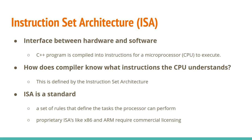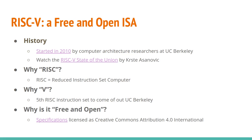Proprietary ISAs like x86 and ARM require licensing, so you can't just use them. RISC-V is a free and open source instruction set. It started about 10 years ago at UC Berkeley by a group of computer researchers led by Krste Asanović. He gives a talk called the RISC-V State of the Union a couple of times a year. RISC stands for Reduced Instruction Set Computer — a concept in computer architecture from the early 80s that's become quite dominant. ARM is a RISC instruction set. The V stands for the fifth instruction set to come out of UC Berkeley, and the RISC-V specifications are licensed under the Creative Commons attribution license.